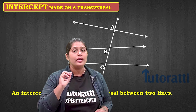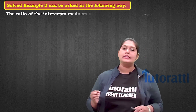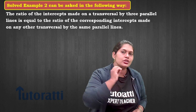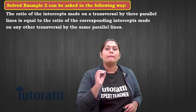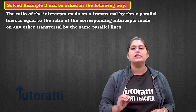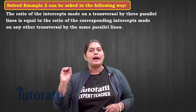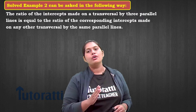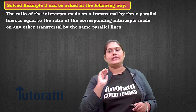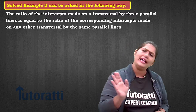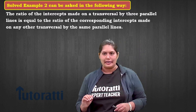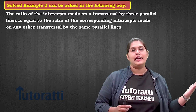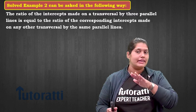Now how can we use that in a question? The ratio of the intercepts made on the transversal by the three parallel lines is equal to the ratio of the corresponding intercepts made by any other transversal on the parallel lines.